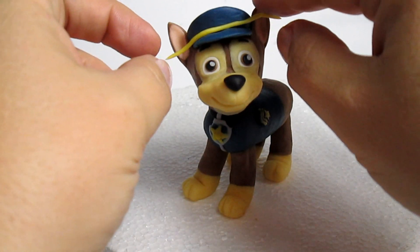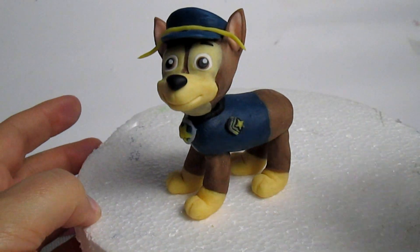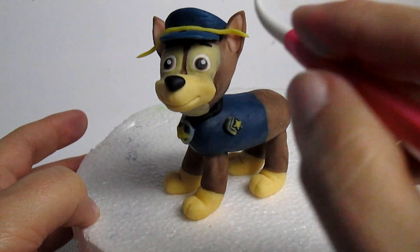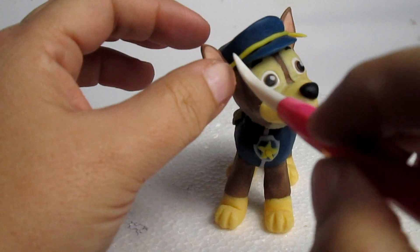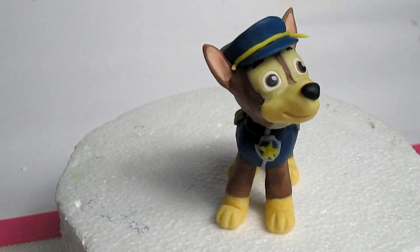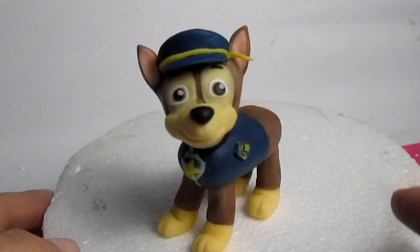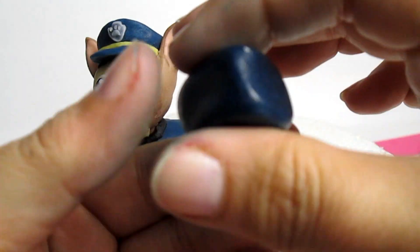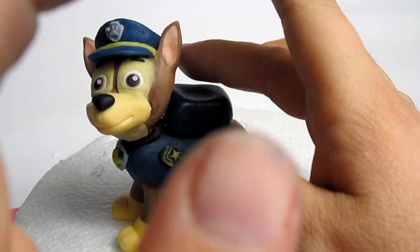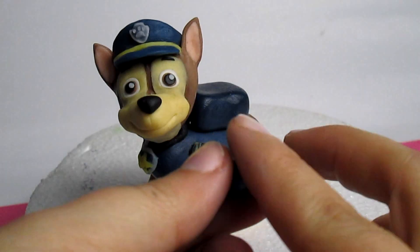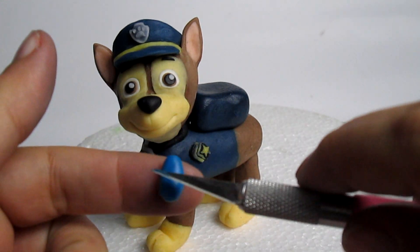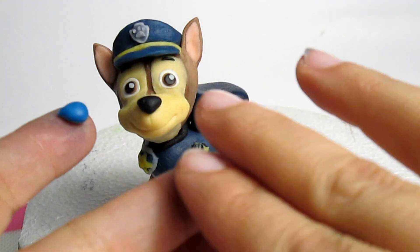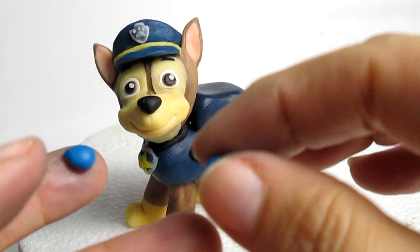I'm adding a strip of yellow fondant onto the hat and remove any excess fondant. To make the backpack, I'm using some very dark blue and I'm making a rectangle from it. And on the sides of the backpack, I'm adding some small pieces of blue fondant.